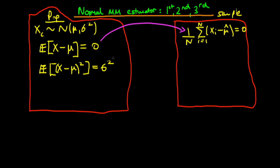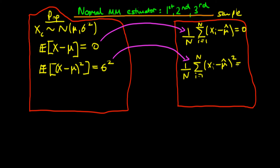Then for the second moment condition, we again replace the expectation by one over n times the sum. So we get one over n times the sum from i equals one to n of x_i minus mu hat, all squared, equal to sigma hat squared. Solving these two equations simultaneously defines a method of moments estimator for the parameters mu and sigma squared.